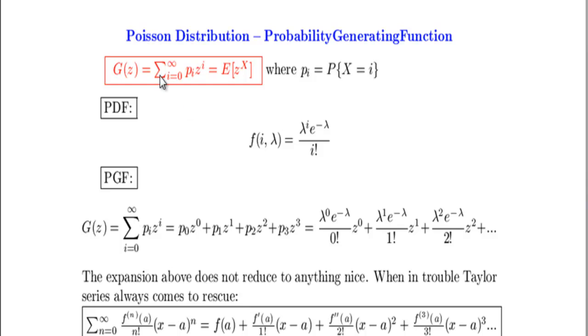When we derive the probability generating function all we have to do is just to do a sum of probabilities times z to the power of the integer associated with this probability. This may sound complicated at first but there's nothing really complicated in that.